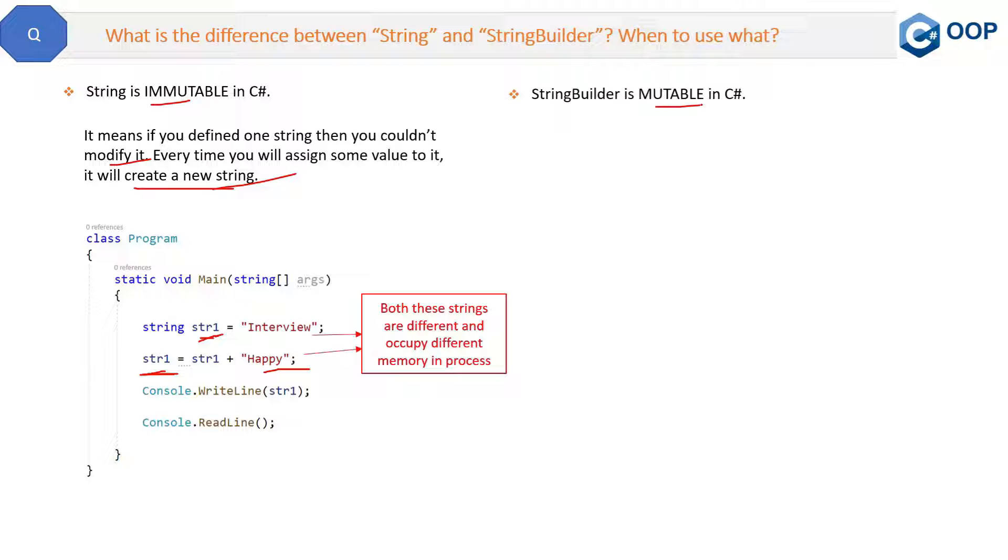StringBuilder is mutable, so that is basically opposite of a string. So what does that mean? This means that if any manipulation will be done on a string, then it will not create a new instance every time. So exactly opposite of the string.